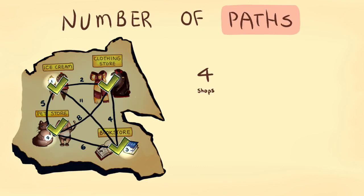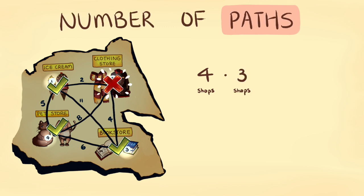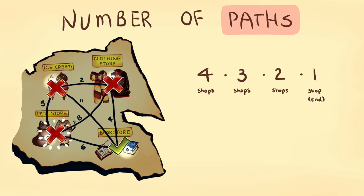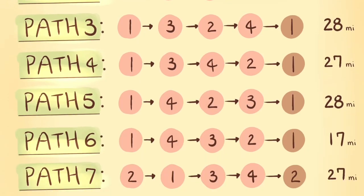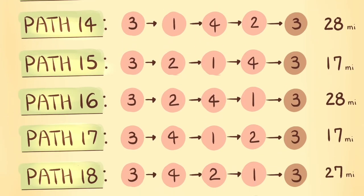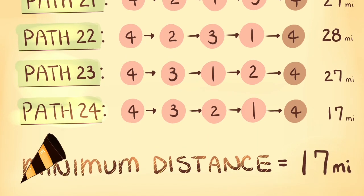There are 4 shops to start off. For each of those 4 shops, we have 3 choices to visit next, then 2, then 1, so there are 4 factorial, or 24, paths to check. It's easy to list all 24 of these paths, calculate the distance for each, and find the shortest, which is 17 miles for our example.